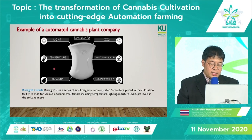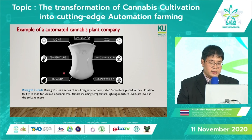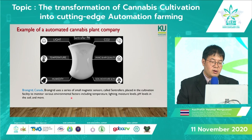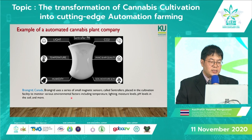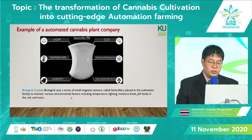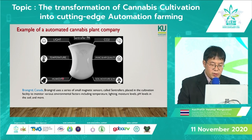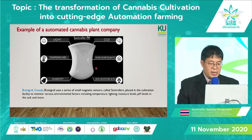Here is an example of an automated cannabis plant company: Benkitt. Benkitt uses a series of small magnetic sensors called Centeller, placed in the cultivation facility to monitor various environmental factors including temperature, lighting, moisture level, pH level in the soil, and more.